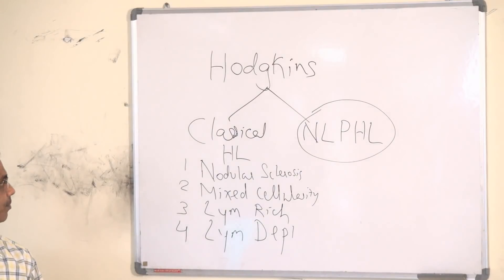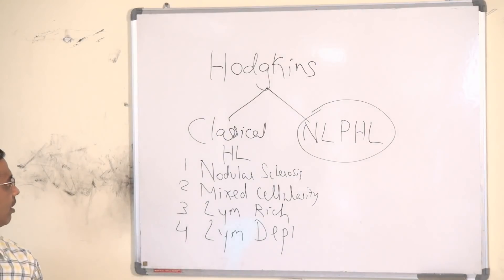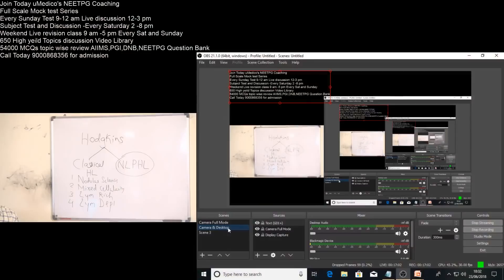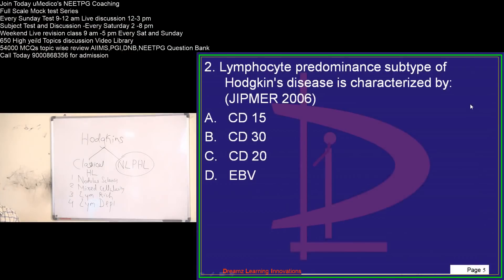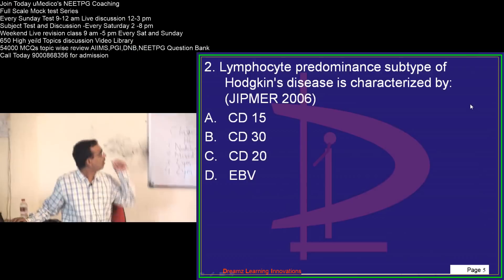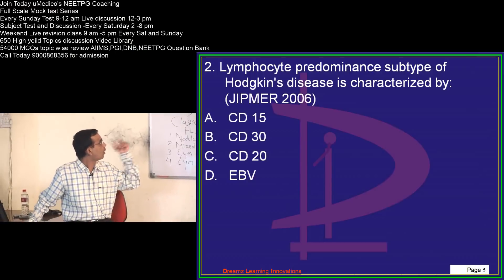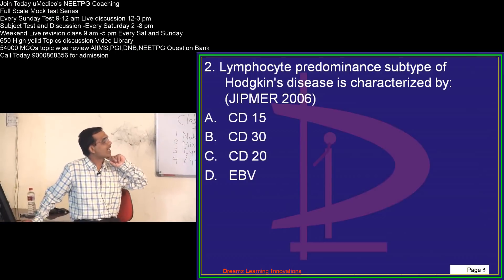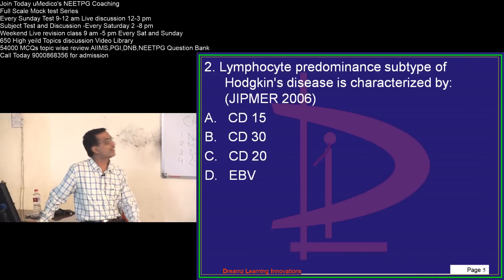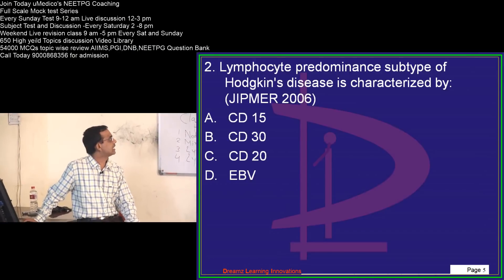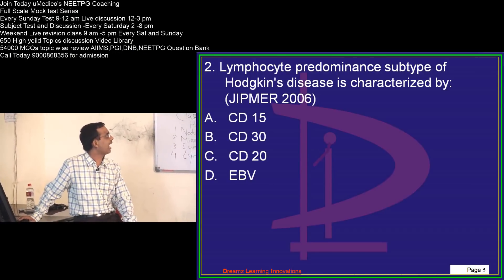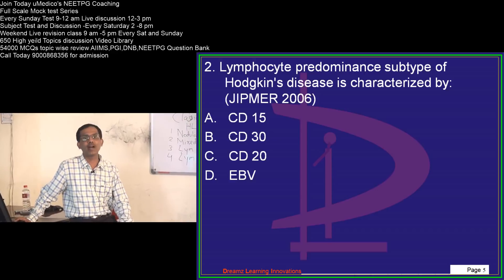Classical Hodgkin's lymphoma has four subtypes: nodular sclerosis, mixed cellularity, lymphocyte rich, and lymphocyte depleted. The present question is asking about NLPHL — nodular lymphocyte predominant Hodgkin's lymphoma. Don't confuse it with lymphocyte rich, and don't confuse the word 'nodular' with nodular sclerosis, which is a variant of classical. The question has four options: CD15, CD13, CD20, and Epstein-Barr virus.